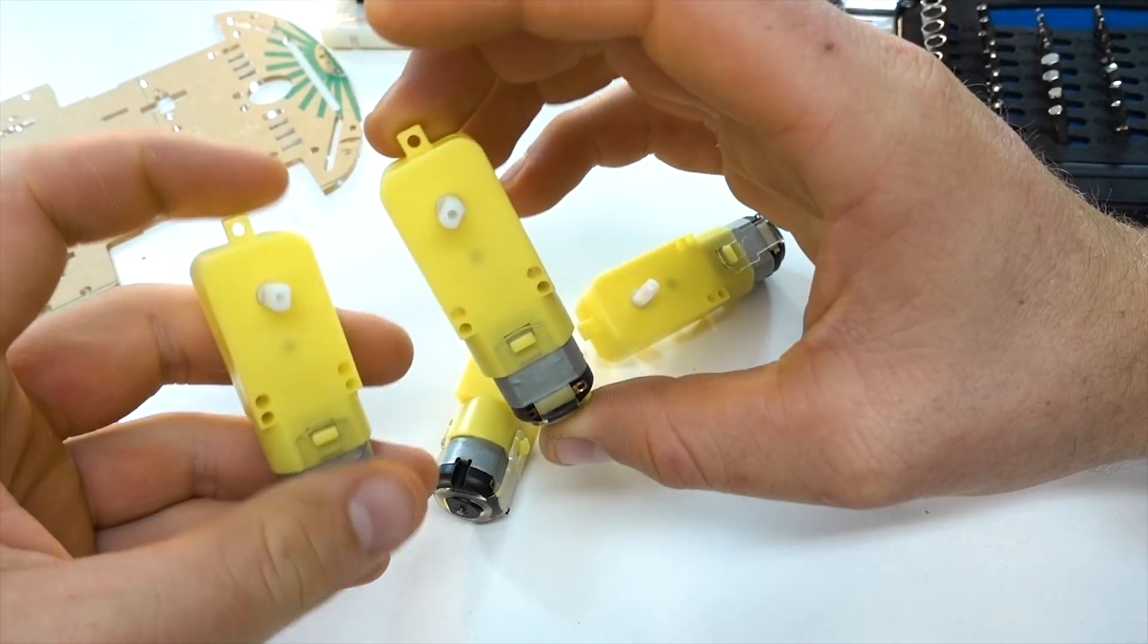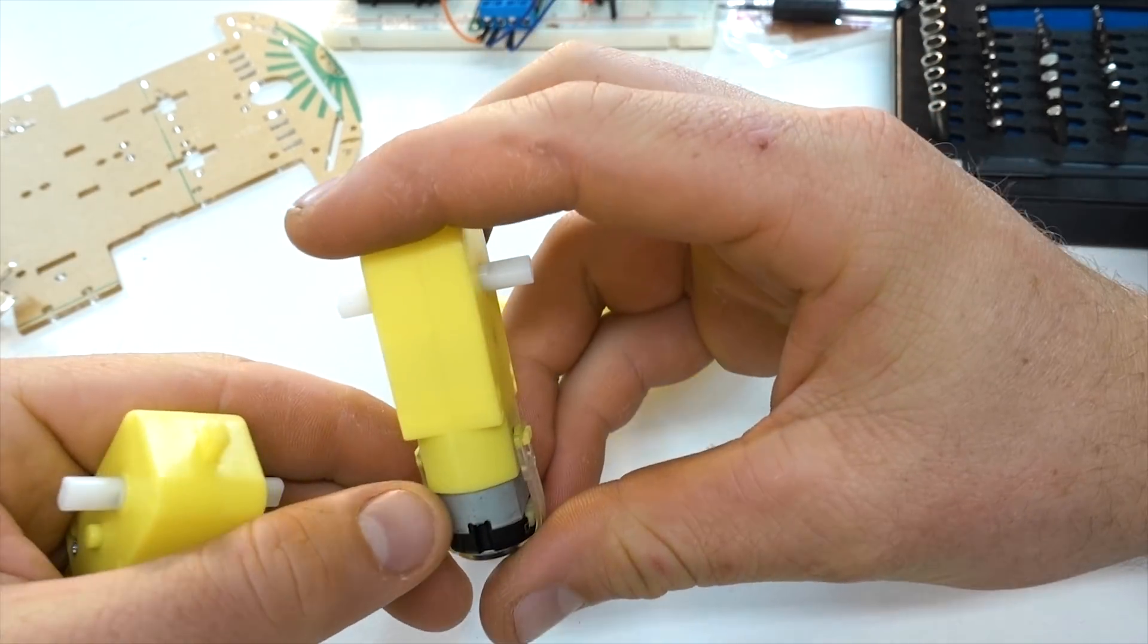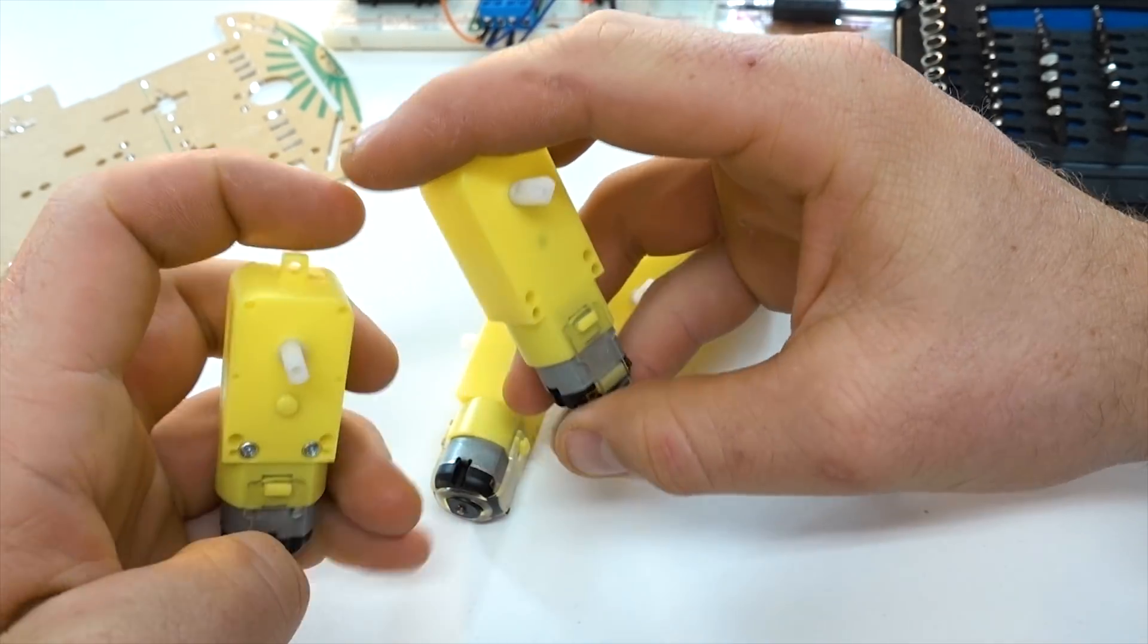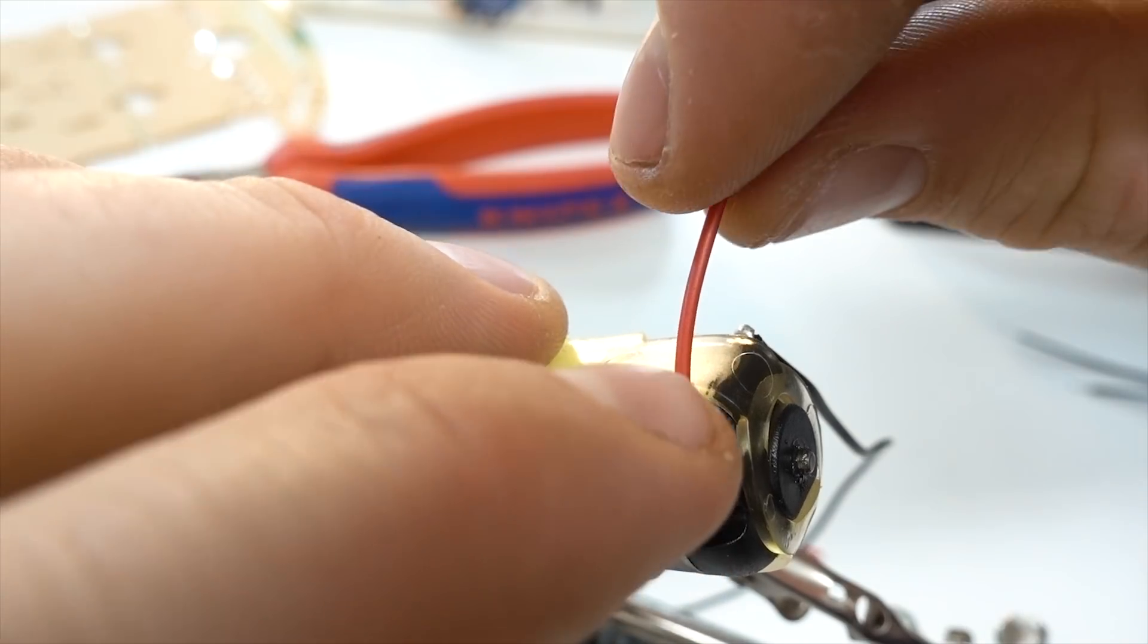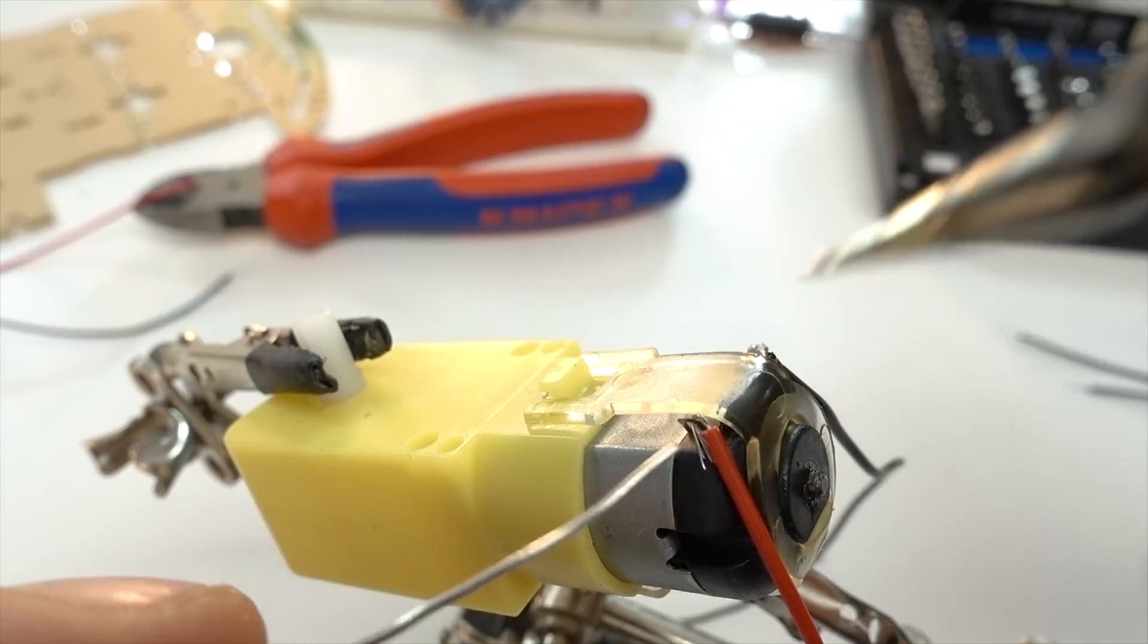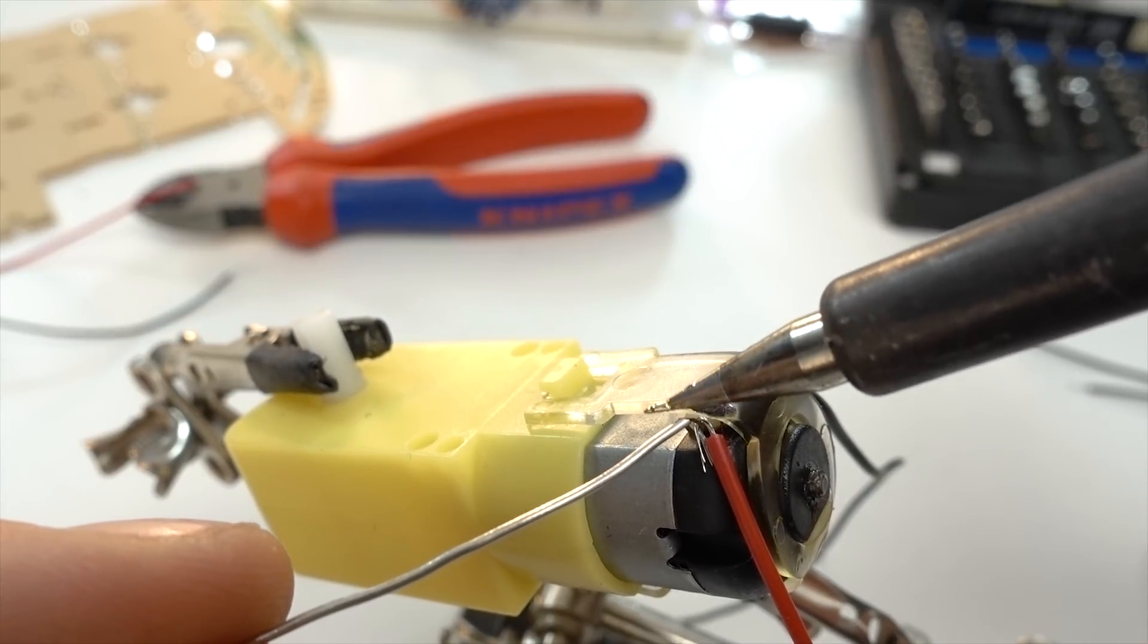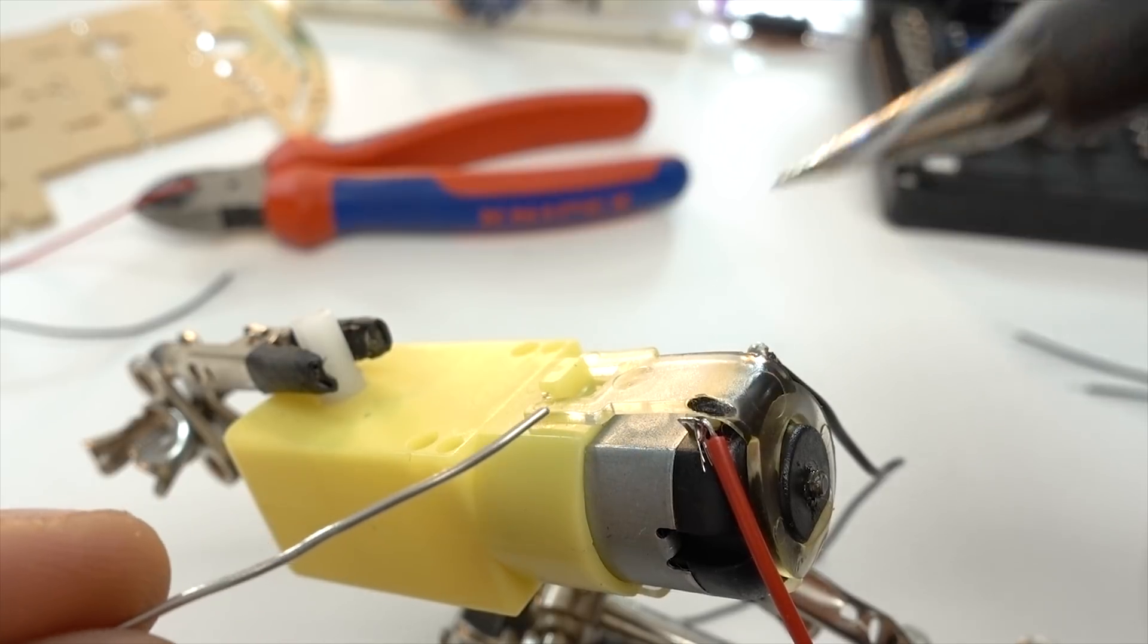These are the four gear motors that came with the drive platform. And as you can see, the gearboxes are plastic, and they're probably super cheap and junky. But I think they will do just fine for this project. The first step, though, before we can hook these up to anything, is we actually have to solder on some leads to the little tabs here in order to actually hook these up to anything.